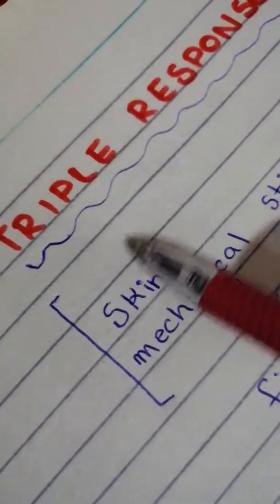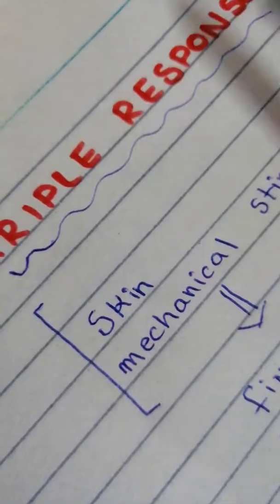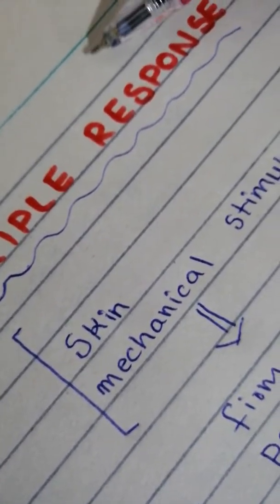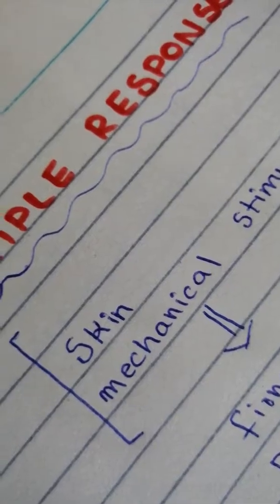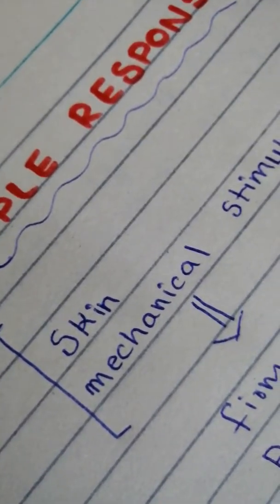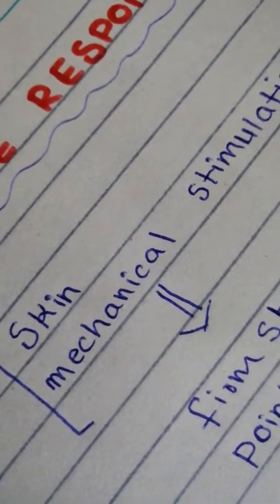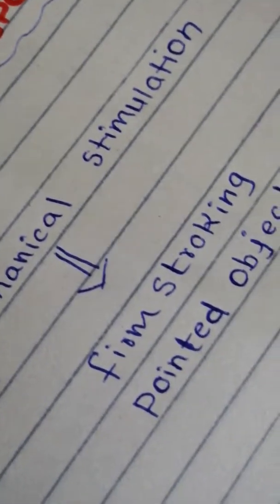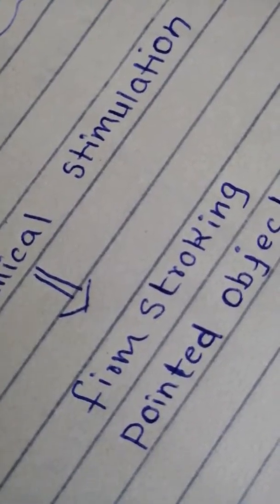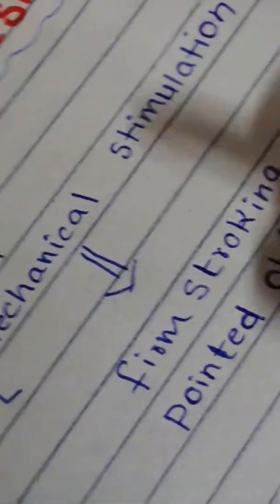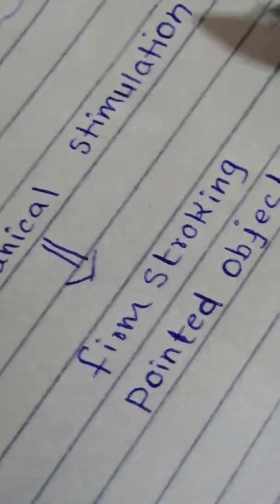When someone asks what the triple response is, you begin: the triple response is a reaction of the skin to mechanical stimulation via firm stroking by a relatively pointed object. It is known as the triple response because this reaction has three parts to it. The first is the red line.